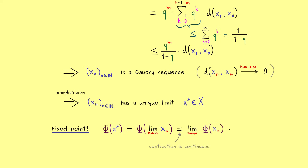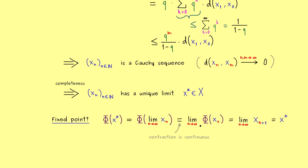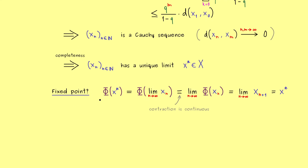Pulling out the limit gives us the limit of the sequence φ(xₙ), which is simply xₙ₊₁ — the same sequence shifted by one index. Obviously shifting the index does not change the limit, so we still get x*. Therefore φ(x*) = x*, confirming that x* is indeed a fixed point for the map φ.